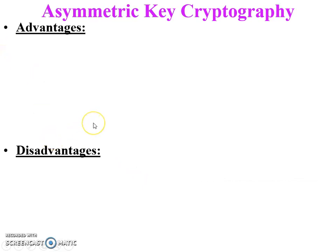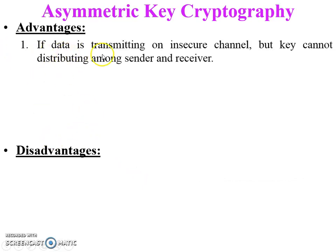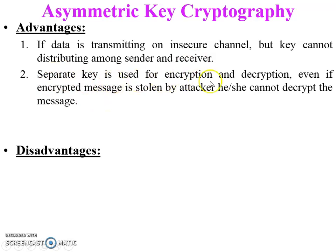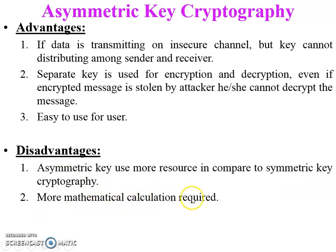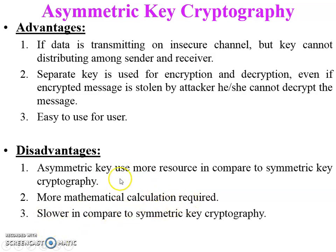Advantages of asymmetric key cryptography: data can be transmitted over an insecure channel without needing to distribute the key between sender and receiver. Even if a hacker captures the message, they cannot decrypt it. Separate keys are used for encryption and decryption, so even if an encrypted message is stolen, the attacker cannot decrypt it easily. It is also easy to use. Disadvantage: asymmetric key cryptography uses more resources compared to symmetric key cryptography, requires more mathematical calculation, and is slower than symmetric key cryptography.